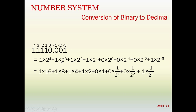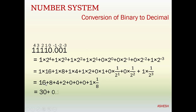Evaluating: 1 into 2 to the power 4 equals 16, 1 into 2 to the power 3 equals 8, 1 into 2 to the power 2 equals 4, 1 into 2 to the power 1 equals 2, 0 into 2 to the power 0 equals 0. For the fraction part: 0 into 1 by 2 equals 0, 0 into 1 by 4 equals 0, 1 into 1 by 8 equals 0.125. Now: 16 plus 8 plus 4 plus 2 equals 30, and the fraction part is 0.125. So our answer is 30.125.